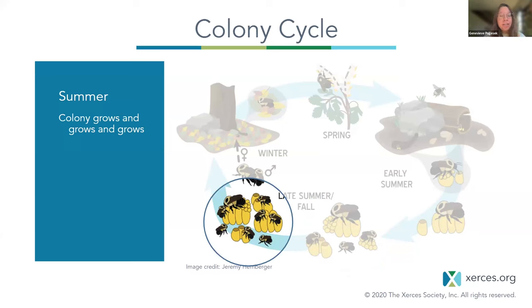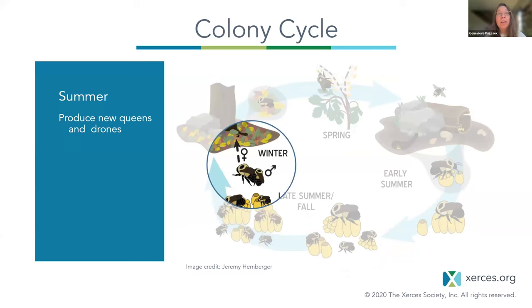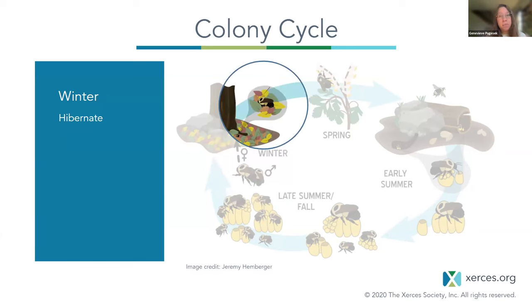The colony grows through summer until it reaches a switch point in late summer or early fall, when it transitions from producing workers to producing new queens and drones — the reproductive individuals. The new queens and drones leave the nest, mate, and the new queens find a location to overwinter. All other colony members expire before winter. The timing of these events varies considerably between different bumblebee species.